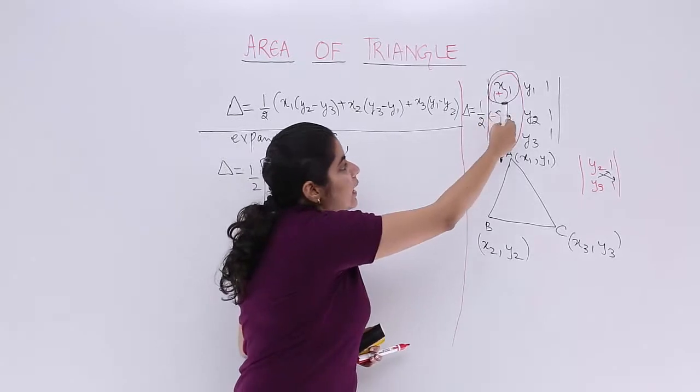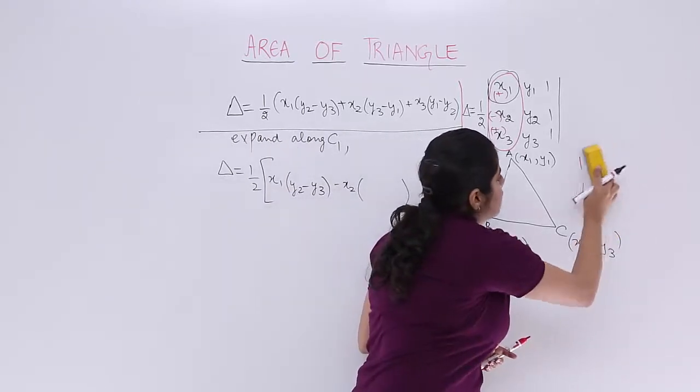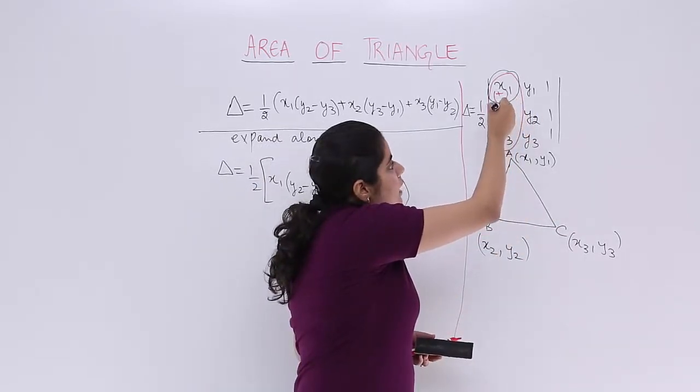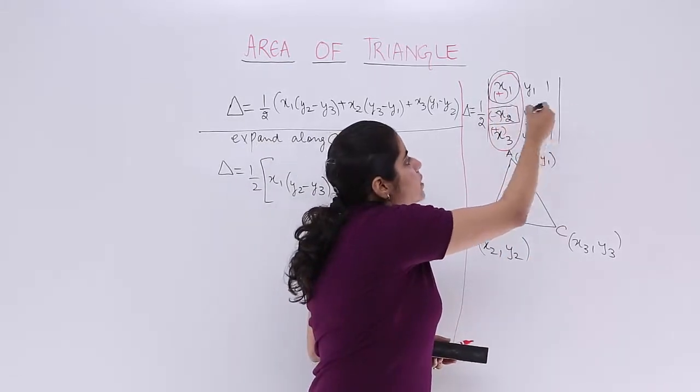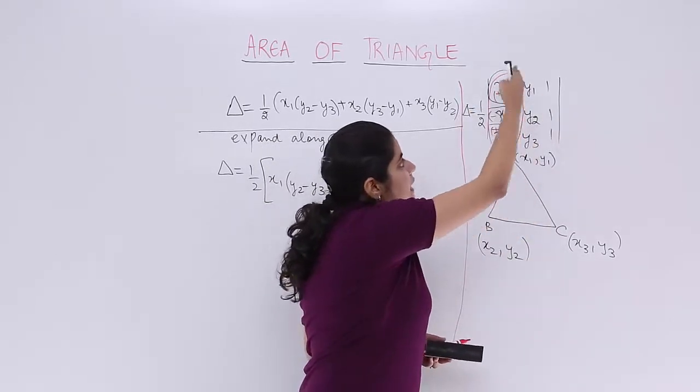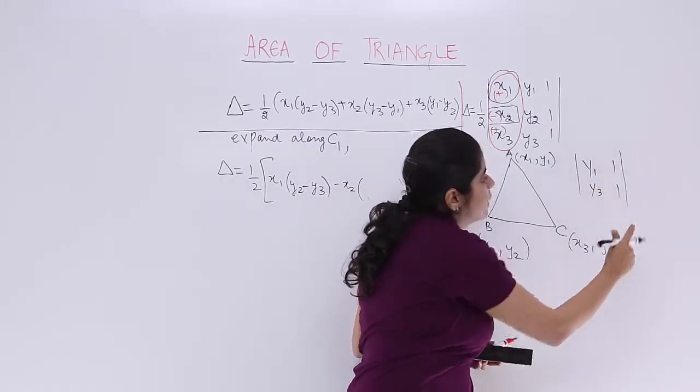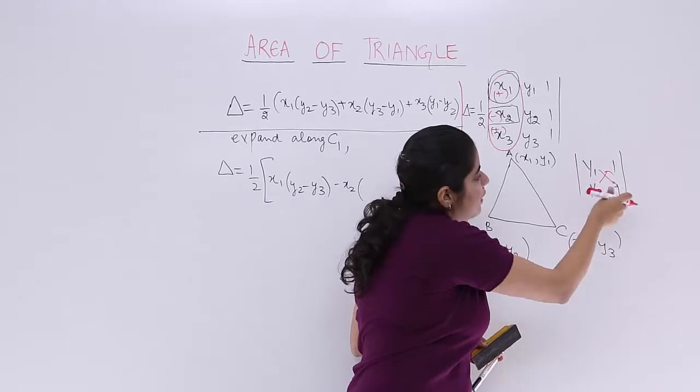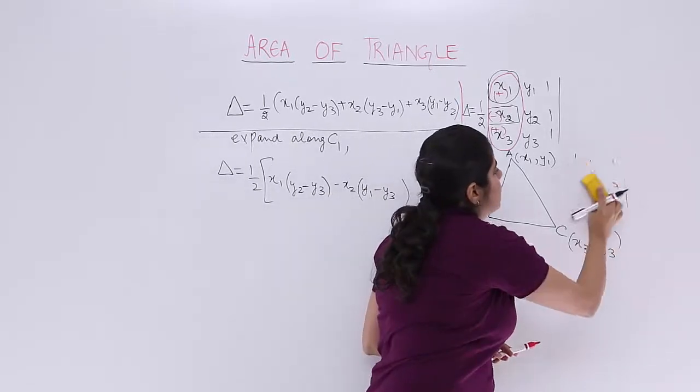Next is minus x2. For x2, ignore the second row and ignore the first column. You are left with y1, 1, y3, 1. This is what you need to evaluate for x2. Now cross multiplying gives me y1 minus y3. So just write it y1 minus y3.